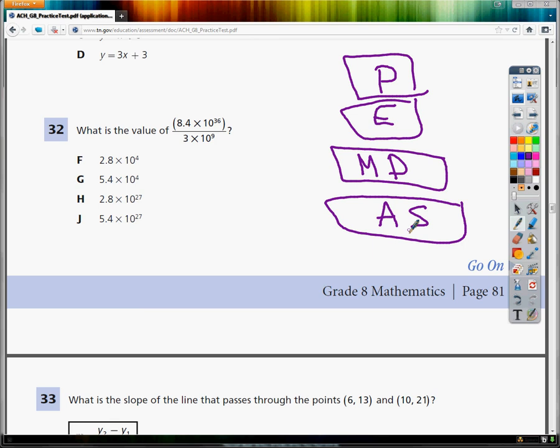So when it says 8.4 times 10 to the 36 divided by 3 times 10 to the 9th, I'm dividing the two numbers. So I divide 8.4 by 3. When I divide 8.4 by 3, I get 2.8.